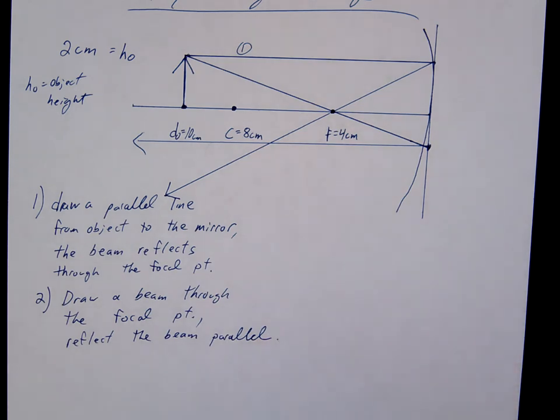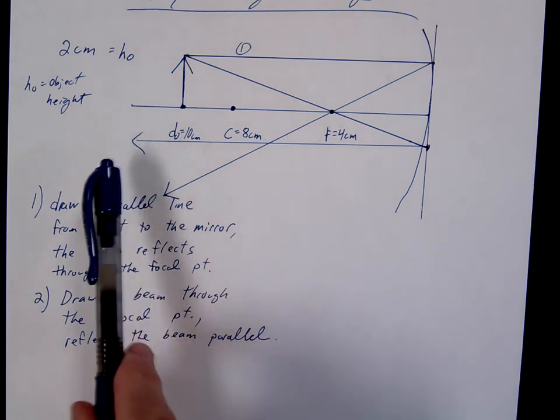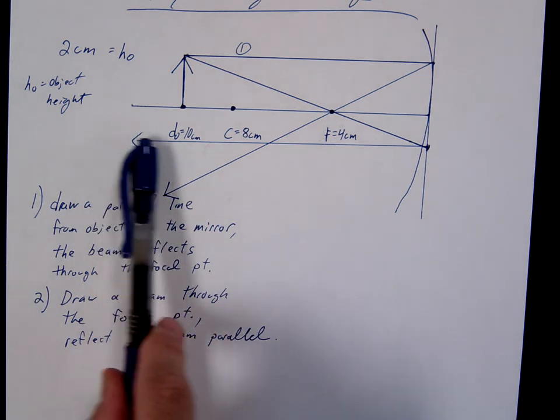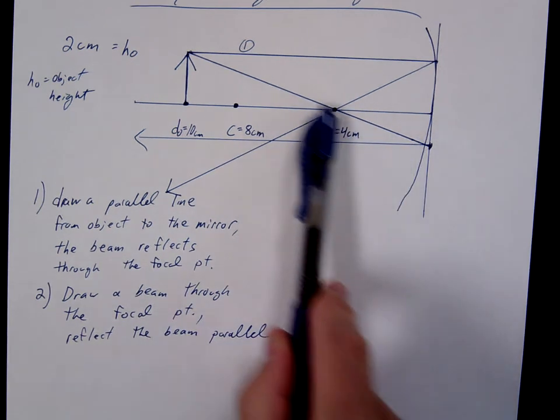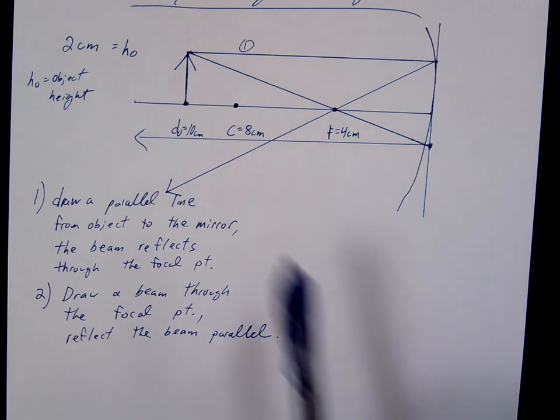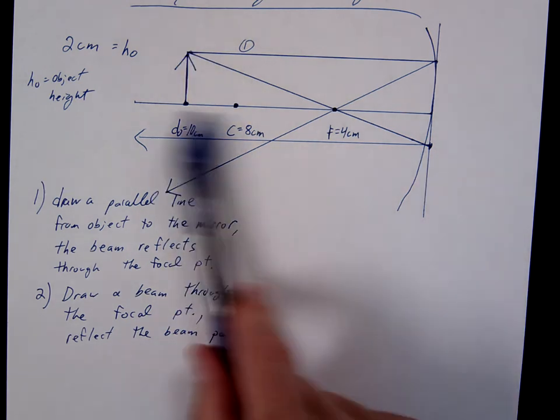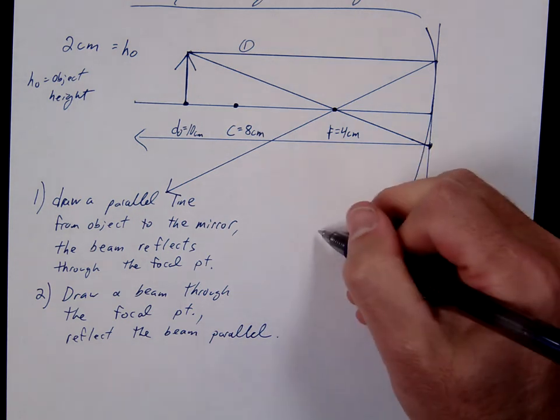The reason you can do this, by the way, is imagine if you watch this beam go backwards. If we went backwards, we'd go parallel, hit the mirror, and then it would go straight through the focal point. So that's why we're able to do that. That's why we're able to draw that beam in the first place. Alright, there's a third beam we can do.